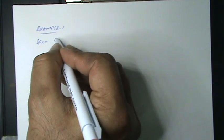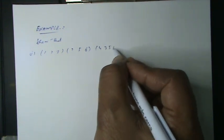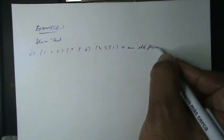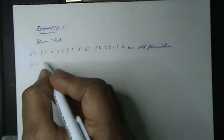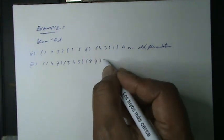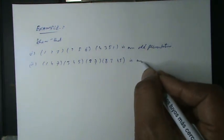Example 2. Show that: first, the product of cycles (1,2,3)(2,5,6)(4,3,5,1) is an odd permutation; second, the product (3,4,5)(8,7)(8,3)(4,5) is an even permutation.